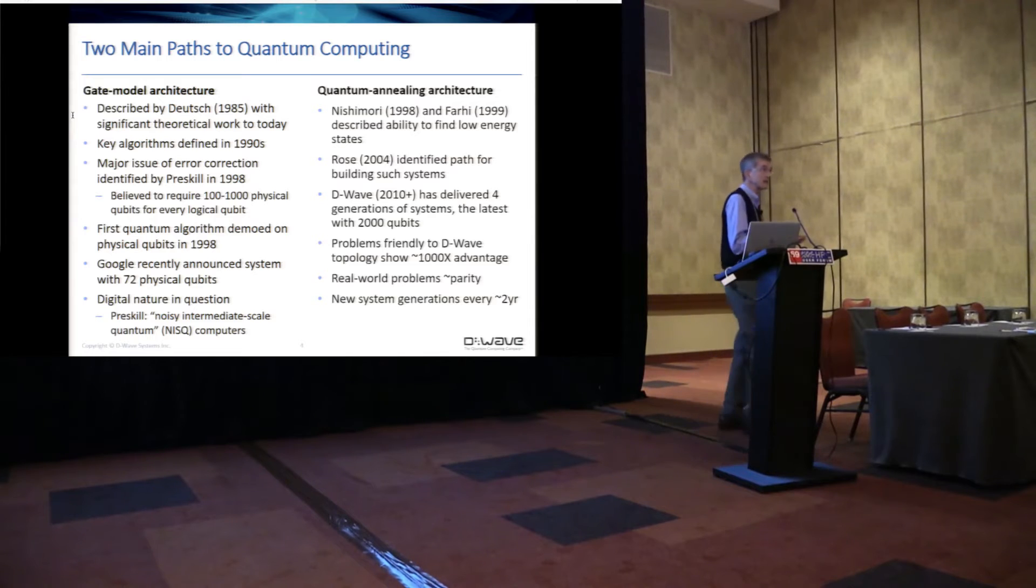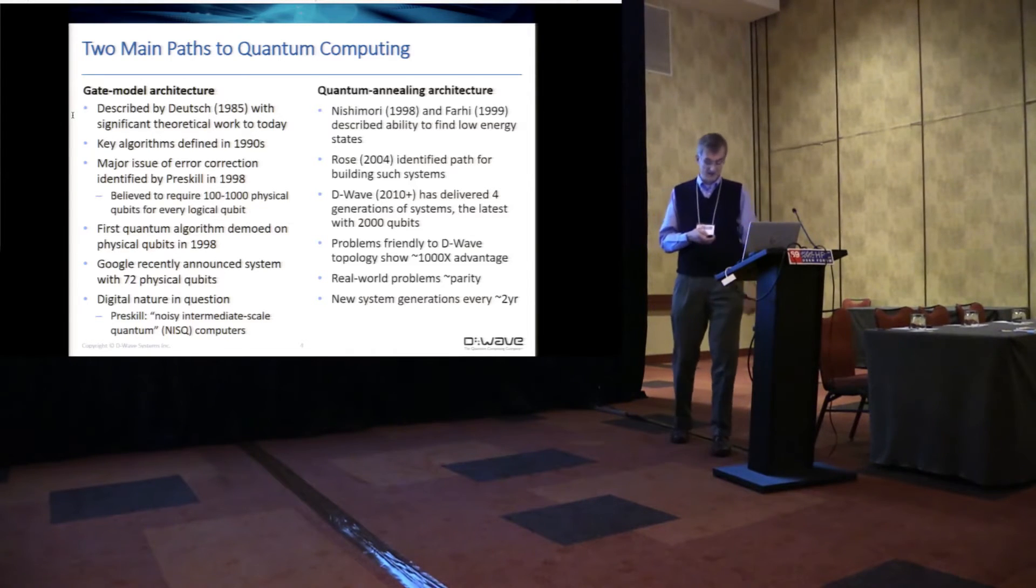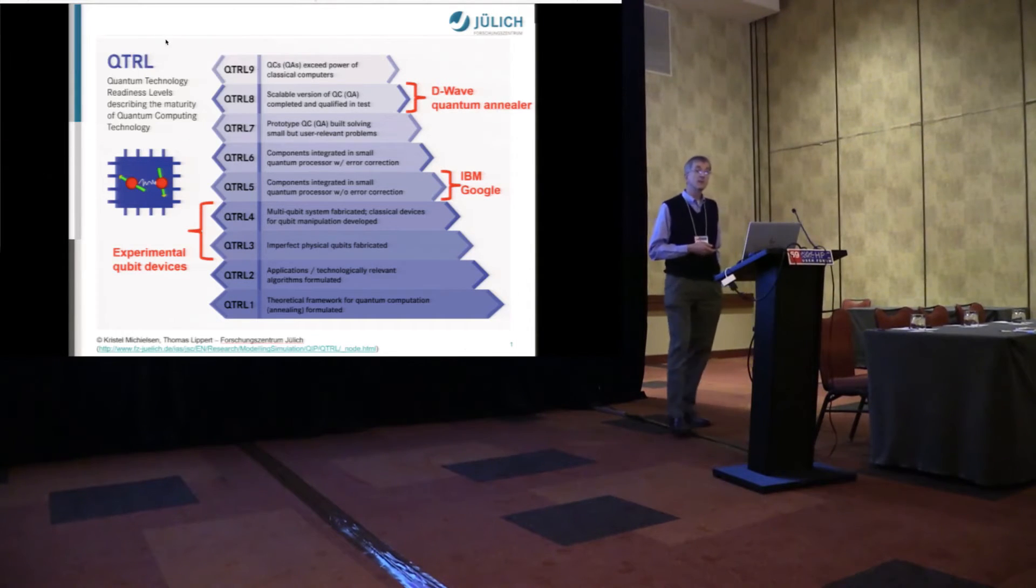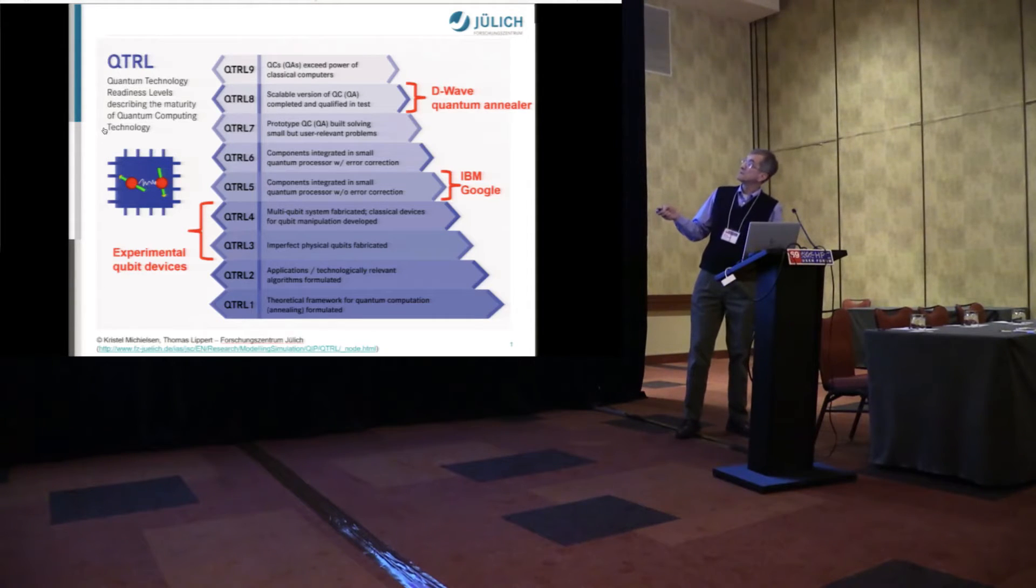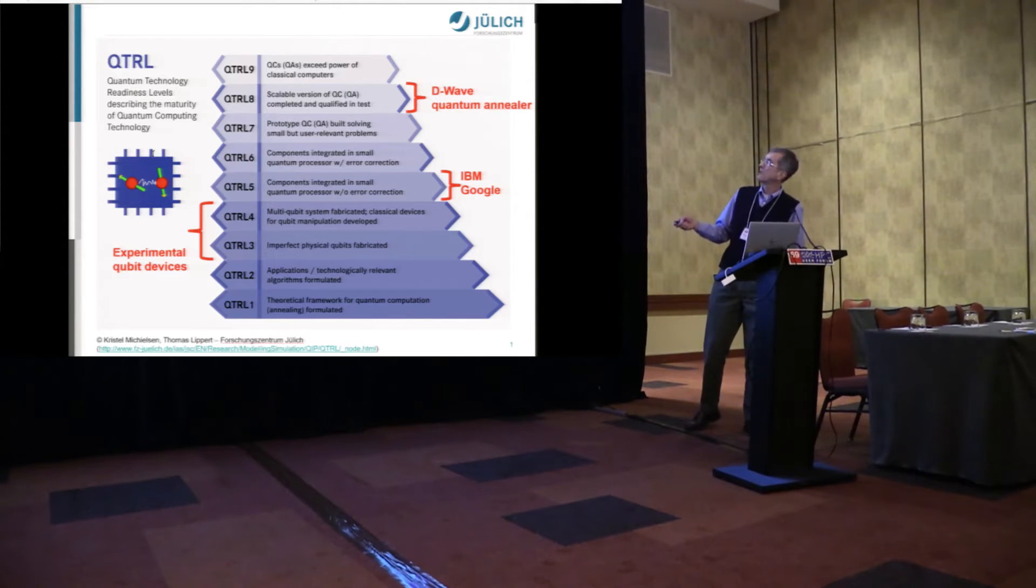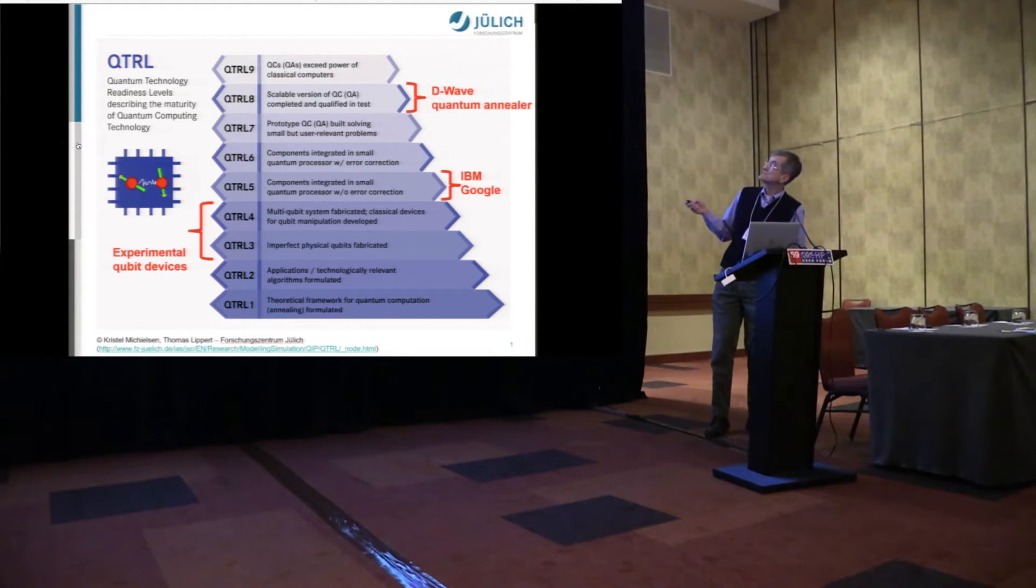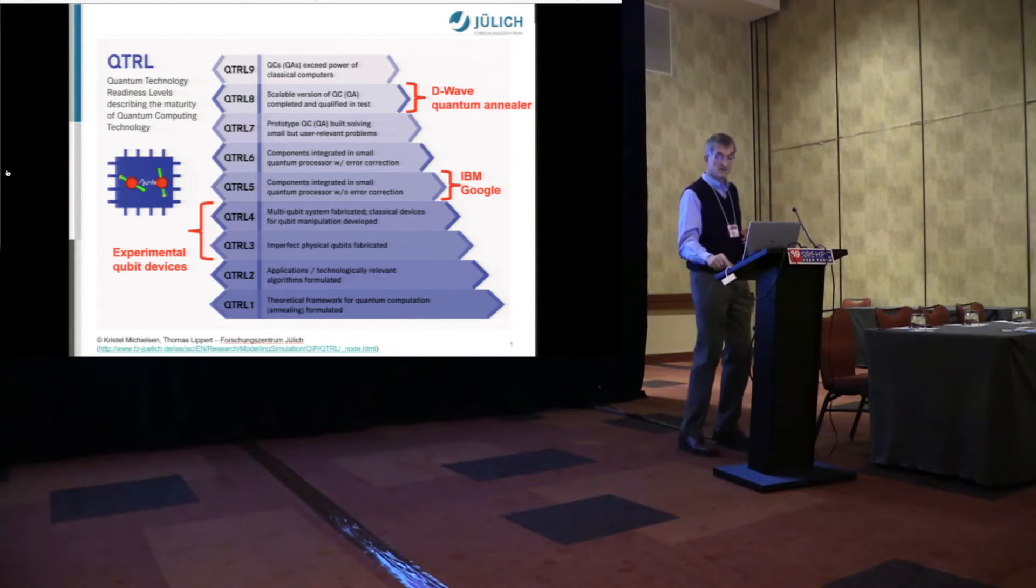We think we're getting close to the point where this is relevant for you. And it's not just us. So this slide is from Julich, who many of you will know as one of the leading HPC labs in Europe. They've recently defined quantum technology readiness levels, describing the maturity. You see the experimental devices at levels three and four, IBM Google systems at QTRL5, and the D-Wave systems up here at level eight, showing a scalable version, completed and qualified in test. And the thing that's missing is to show differentiated performance.